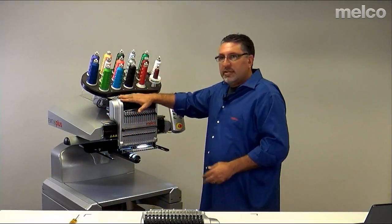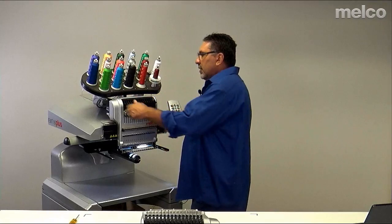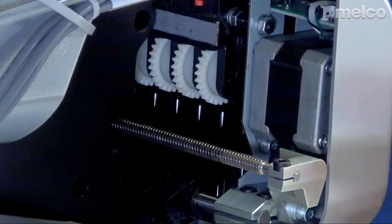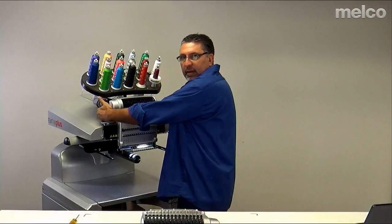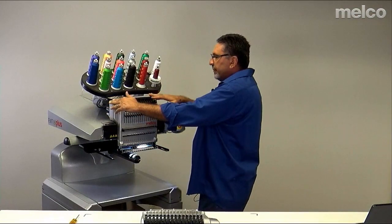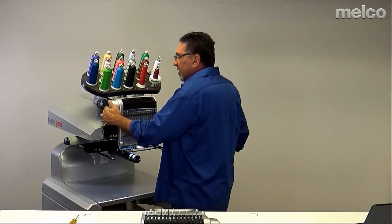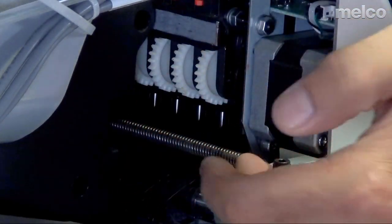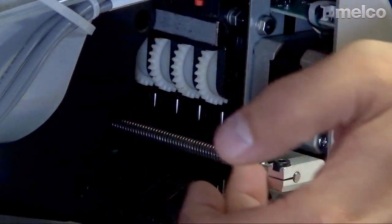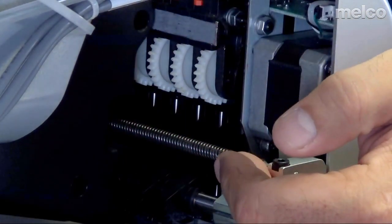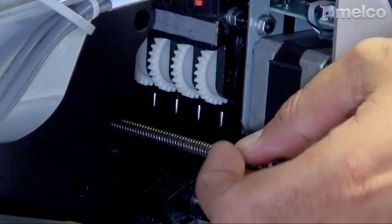We're going to look at the machine itself. If we look on the backside of the gray item here that goes left and right, this is called the needle case. Now if we look on the backside of the needle case, you have a silver threaded rod right here that runs left and right. That is called the color change lead screw.